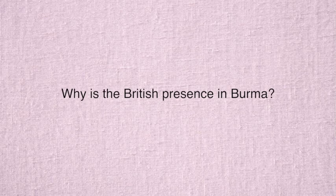George Orwell worked for the British government, and this essay is from an earlier period of his life when he was in Burma — also known as Myanmar, in Southeast Asia. There's Thailand, Burma, Cambodia, Vietnam, and Laos. That sets up a quandary: why is a British subdivisional police officer in Burma? Why is Britain in Burma? Obviously they're expanding their influence, but what purpose is there specifically?